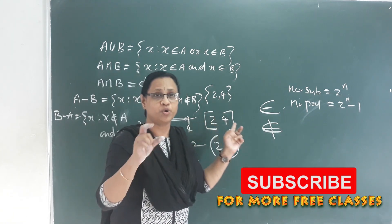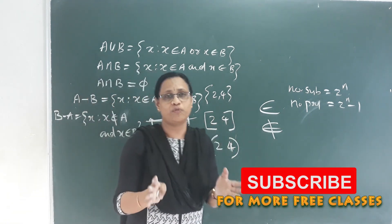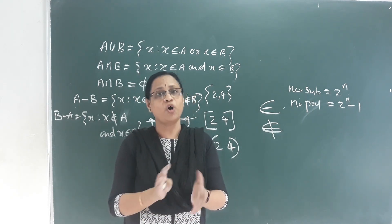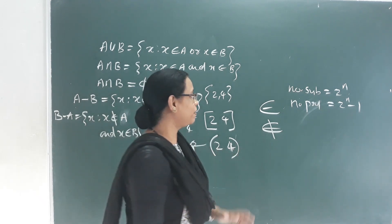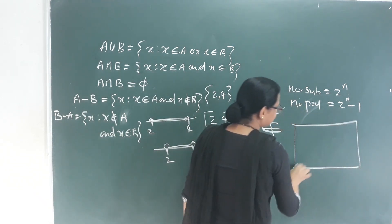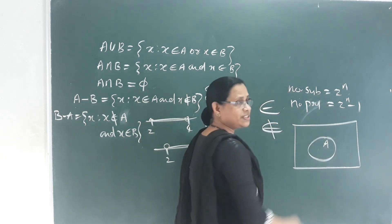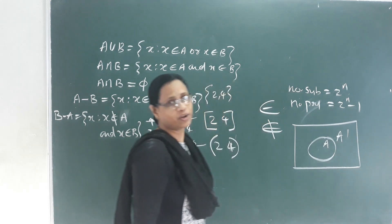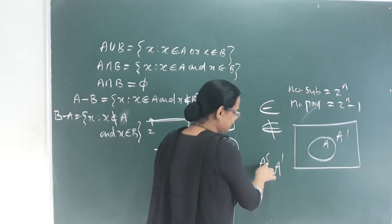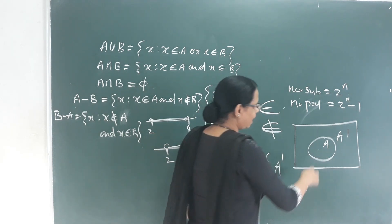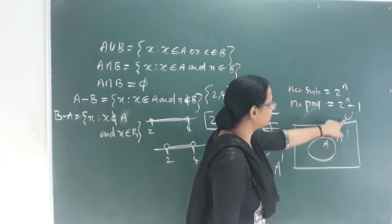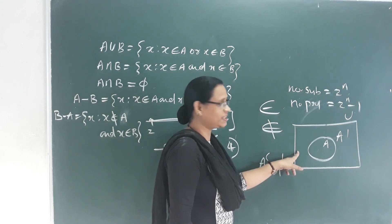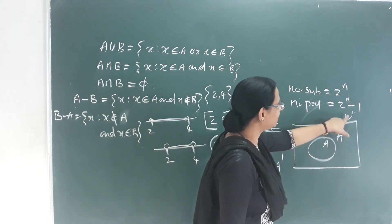The next topic is the Venn Diagram. The representation of a set is called a Venn Diagram. What is the complement of a set A? The complement of A, written as A' or A raised to C, consists of all elements in the Universal Set that are not in A. The Universal Set is a superset of A.